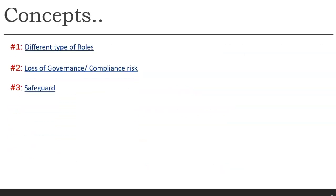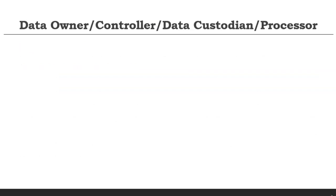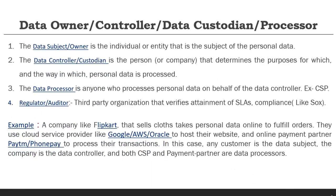There are more risks listed in ENISA, CSA, and other frameworks beyond what I've covered, and I will cover remaining risks in additional lectures. But for exam perspective and real life, the important ones are what I have mentioned. Today's lecture covers three concepts: different types of roles in the cloud, what is loss of governance and compliance risk, and third, what are the safeguards against them.